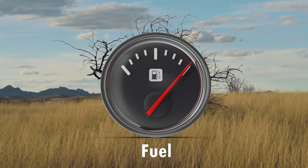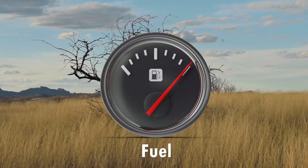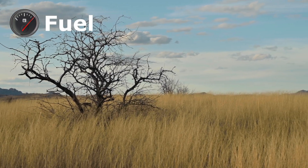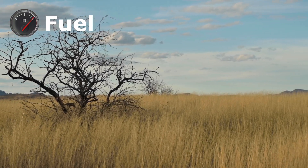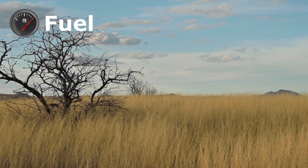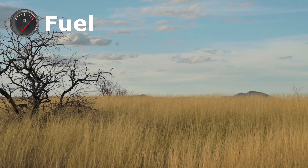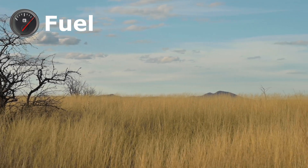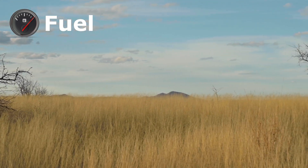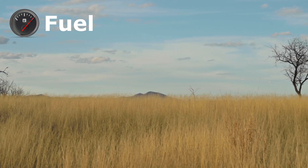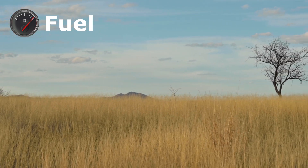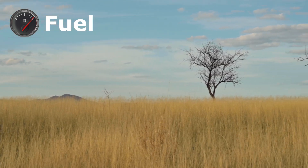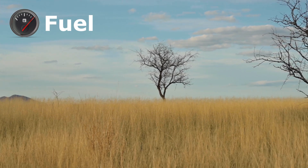Fuel. This is anything that can burn. In a natural environment, the fuel for forest fires includes dry grass, leaves, twigs, branches, and trees. The type and amount of fuel can vary depending on the location and the time of year.